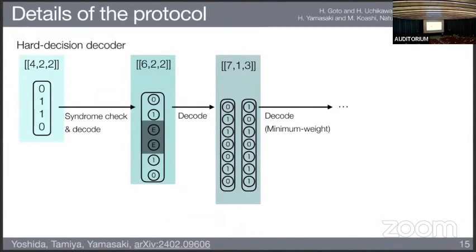For the decoder, we use a basic hard-decision decoder. Since it is a concatenated code, we can decode level by level. First, we decode the measurement outcome at the underlying code level using the 4,2,2 code. Then we collect the decoded qubit information and decode it as the 6,2,2 code, then pass it to the higher-level 7,1,3 code, and decode it, proceeding in this way up to the highest level.